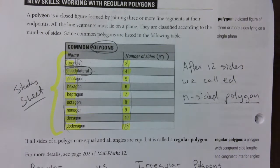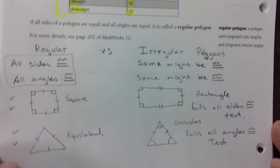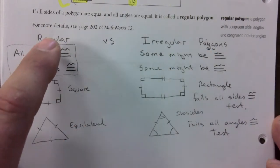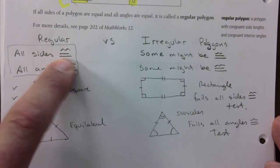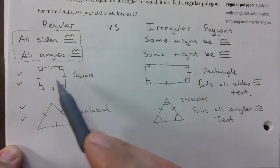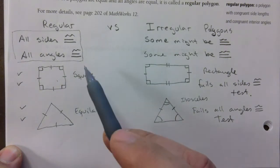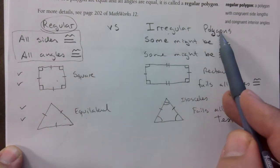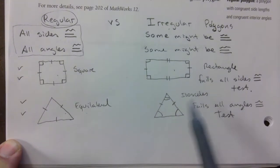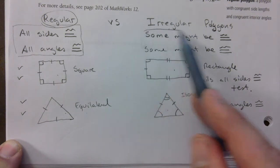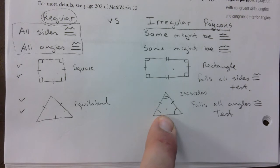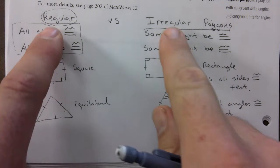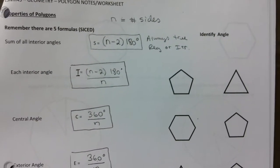We talked about regular versus irregular polygons. To be in the regular category, two checkboxes need to be checked: all sides being congruent and all angles being congruent. An equilateral triangle and a square are regular polygons. A rectangle and an isosceles triangle are irregular because they don't have all sides and all angles the same.